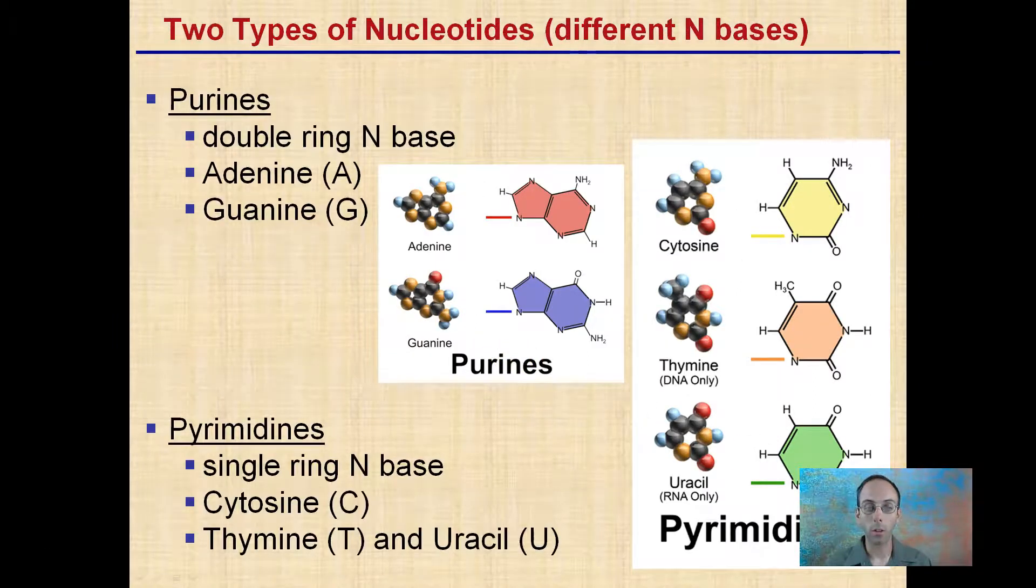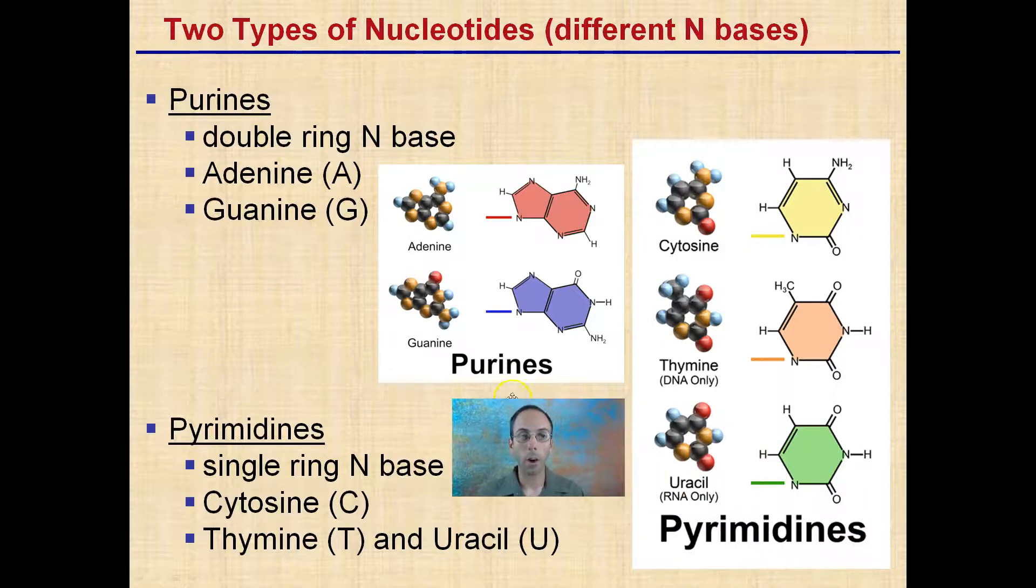Now, looking over here, we have our purines located up here. The purines are a double ring nitrogen base. They are classified as adenine and guanine, which have these double ring structures.